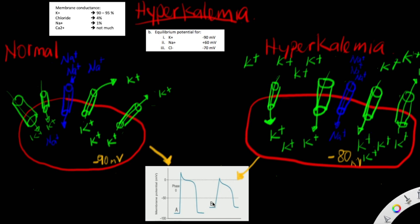So in that sense, there is a decrease in the amplitude of the action potential — one contributor is the decreased peak, and the other is that the resting membrane potential has been depolarized to less negative. The third effect that hyperkalemia has on the action potential is prolonged repolarization, which leads to a decrease in the frequency of the action potential.